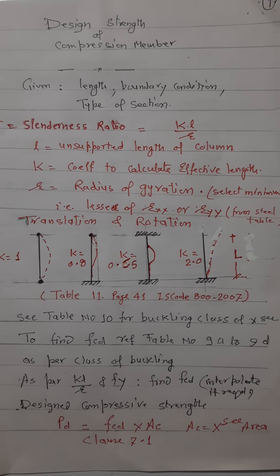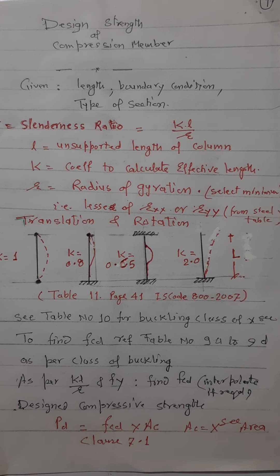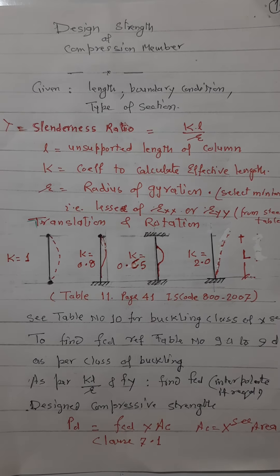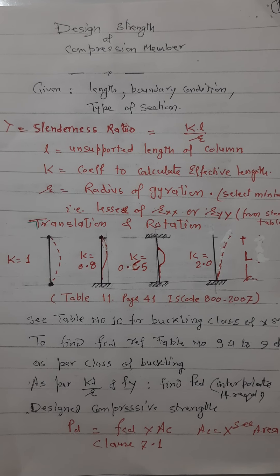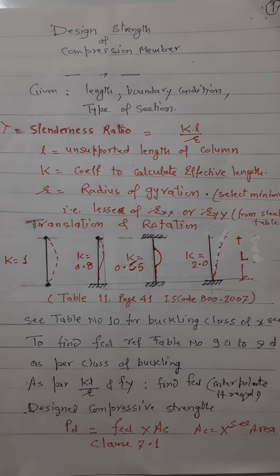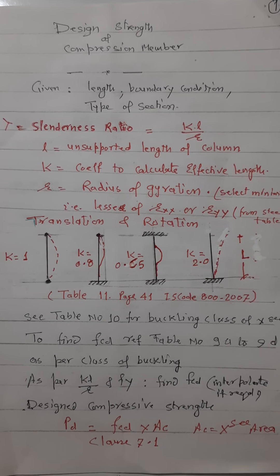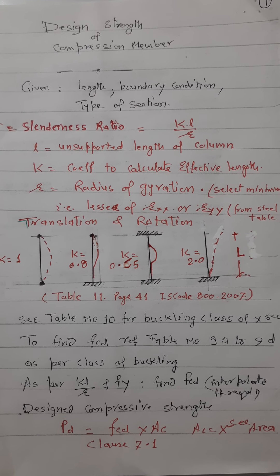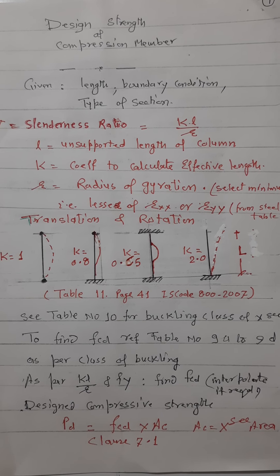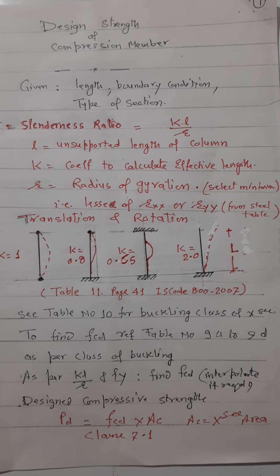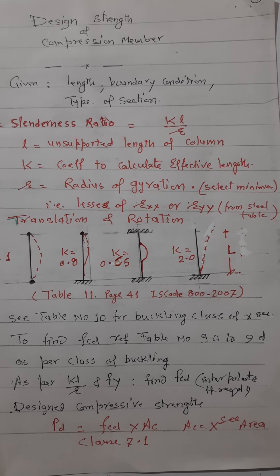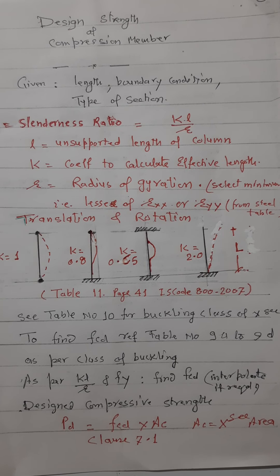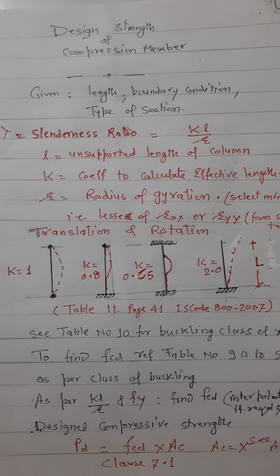First, we will talk about the length. When talking about the length of a compression member, it is required to calculate the effective length of the compression member. Generally, the length given is an unsupported length. That unsupported length is to be multiplied by some constant depending upon the boundary conditions at the ends of the column, as given in IS code 800-2007, Table 11.